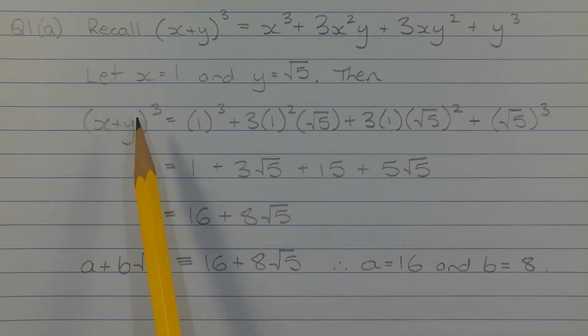Then x plus y in brackets cubed is equal to 1 cubed plus 3 times 1 squared times the square root of 5 plus 3 times 1 times the square root of 5 squared plus the square root of 5 to the power of 3.